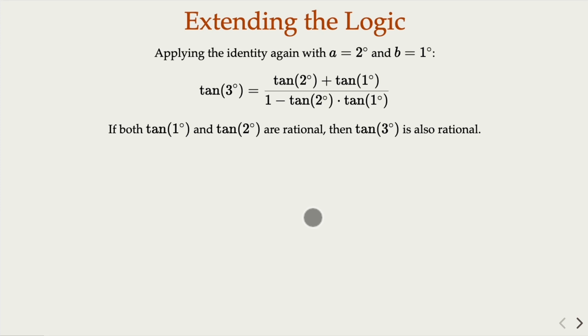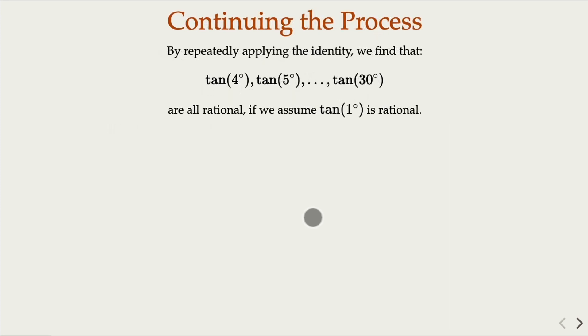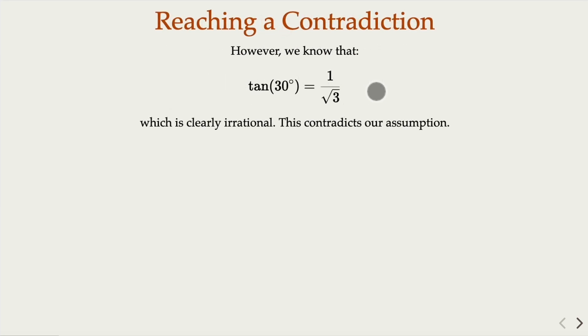You can apply this rule until tangent of thirty degrees. You claim that tangent of thirty degrees is rational, but we know that tangent of thirty degrees is one over square root of three. That's irrational, so that's a contradiction.